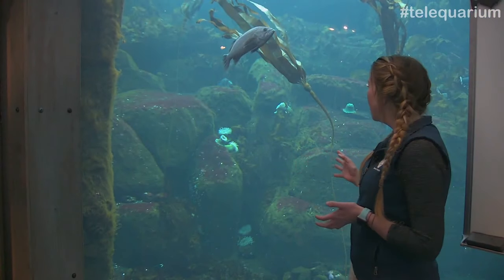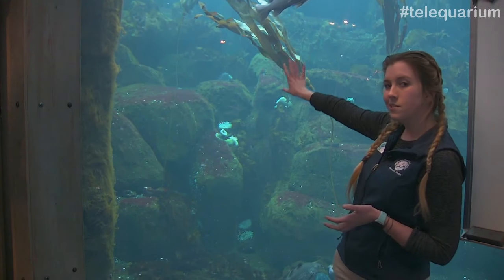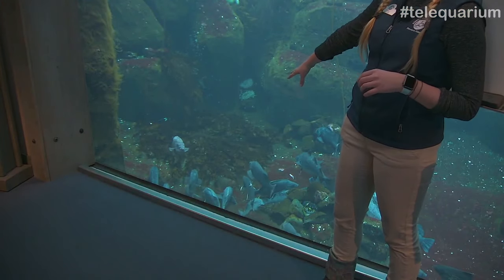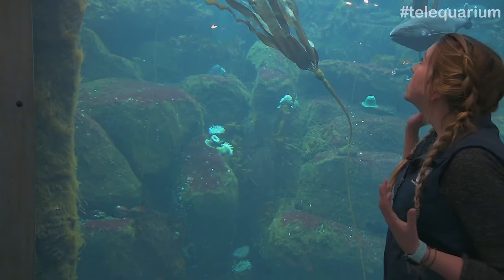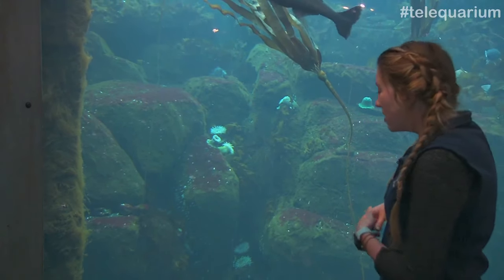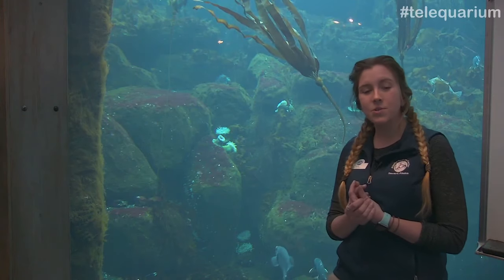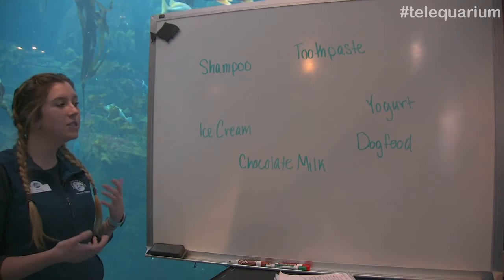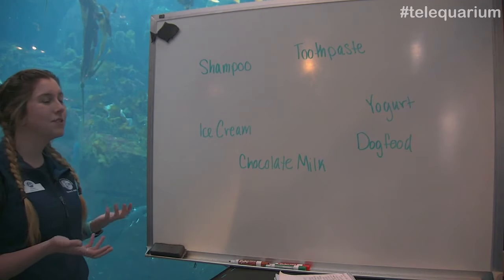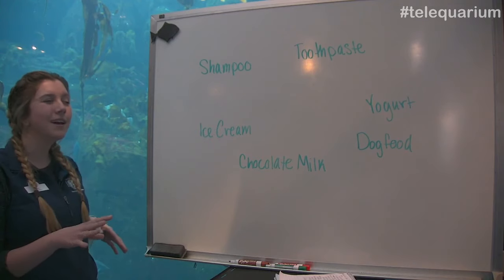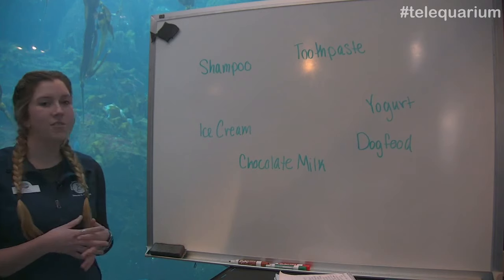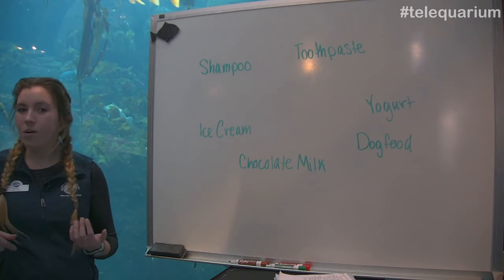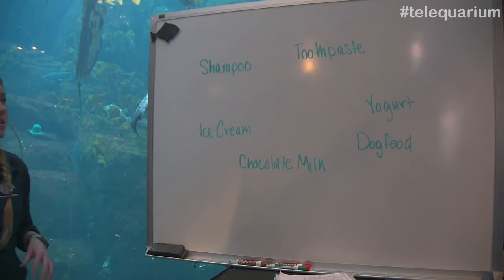We're going to talk about it a little bit more, but you might have noticed there's this kind of really long tree-looking thing over here in the middle. And then around our fish, there's some algae on the ground in this tank as well. So we're going to be talking about that algae, but feel free to look at the fish behind me — they'll probably be doing some cool stuff while I'm talking. To get us started with a warm-up activity, I want you to look at these words on the board over here: shampoo, toothpaste, yogurt, dog food, chocolate milk, ice cream — lots of different things. Take about 30 seconds and try to think about what these items have in common. If you think you know, go ahead and comment down below and let us know what you think.